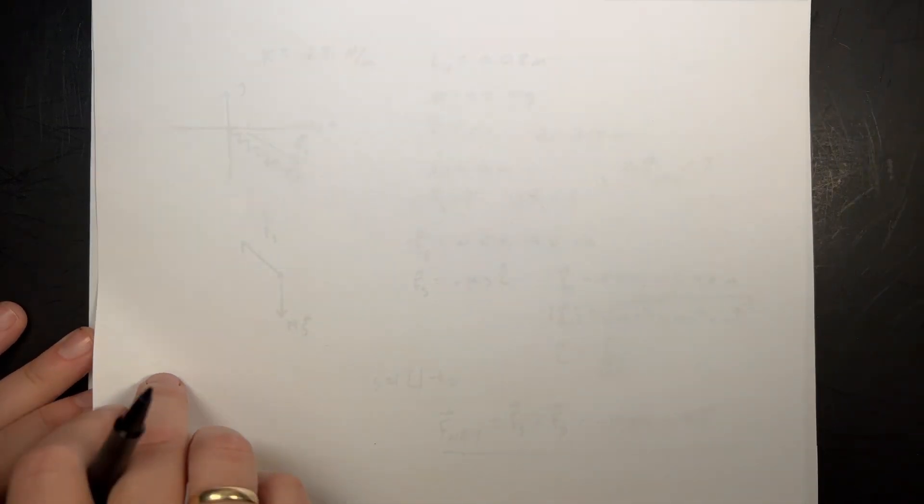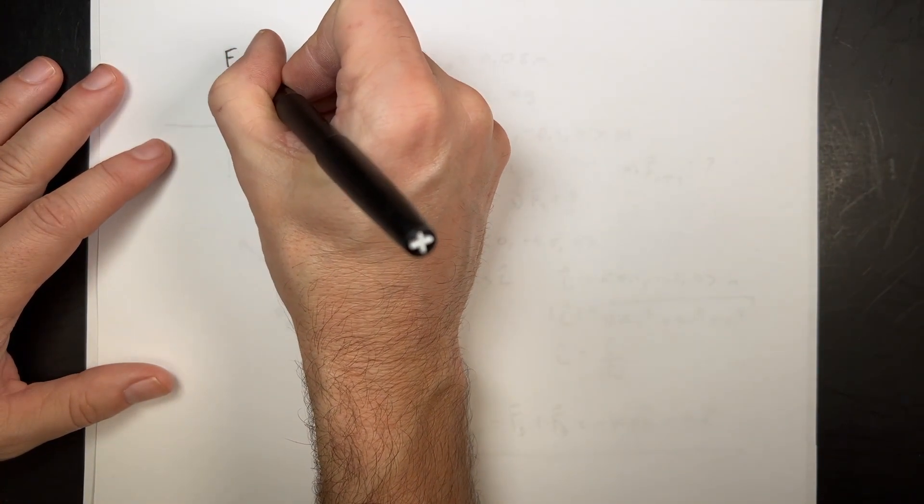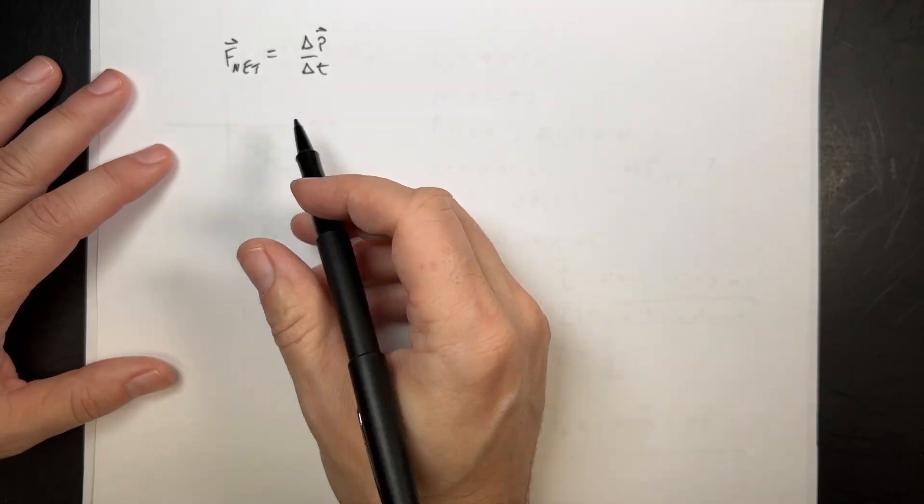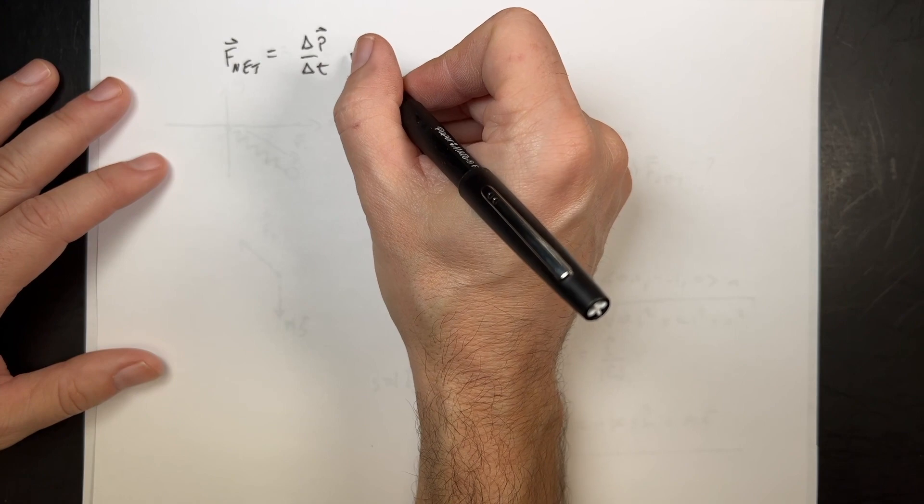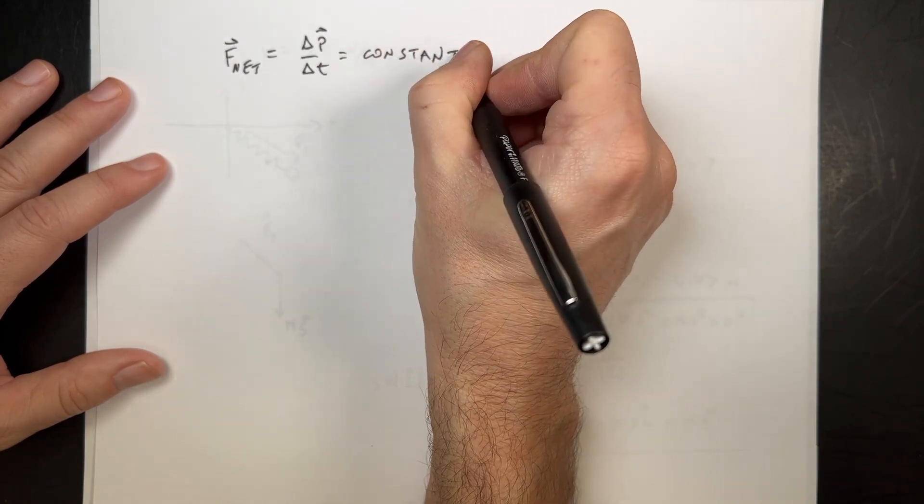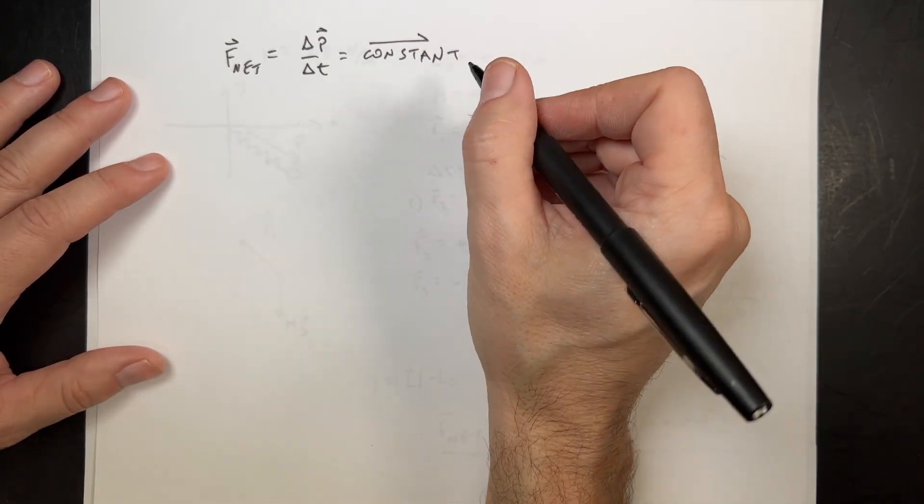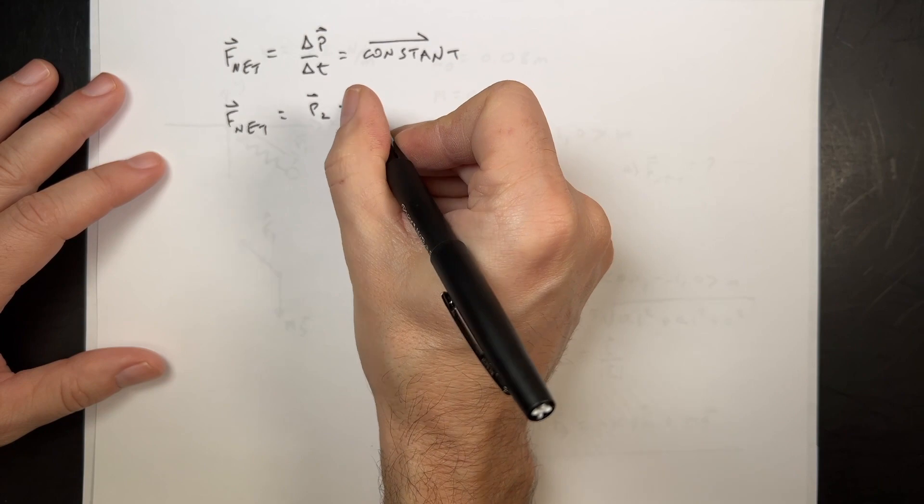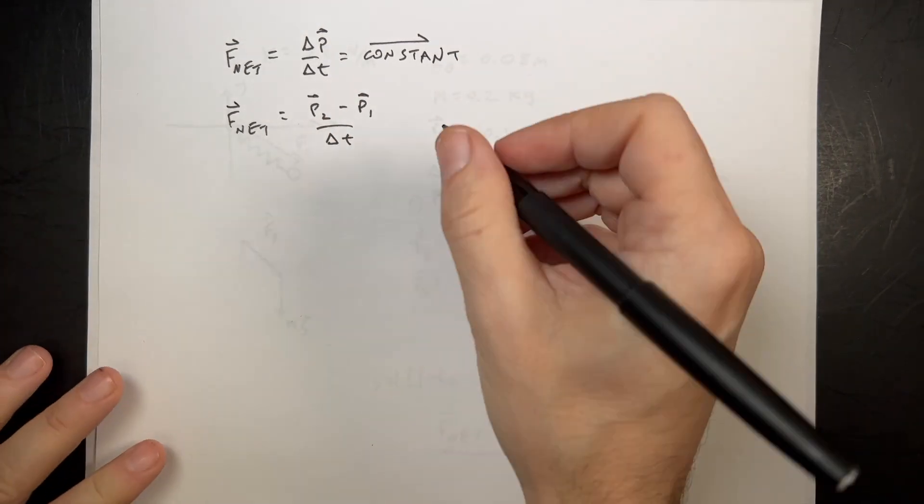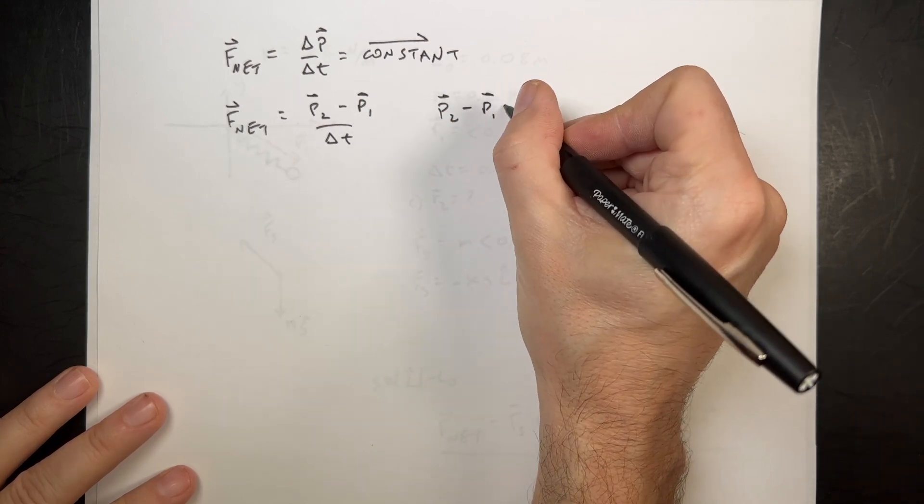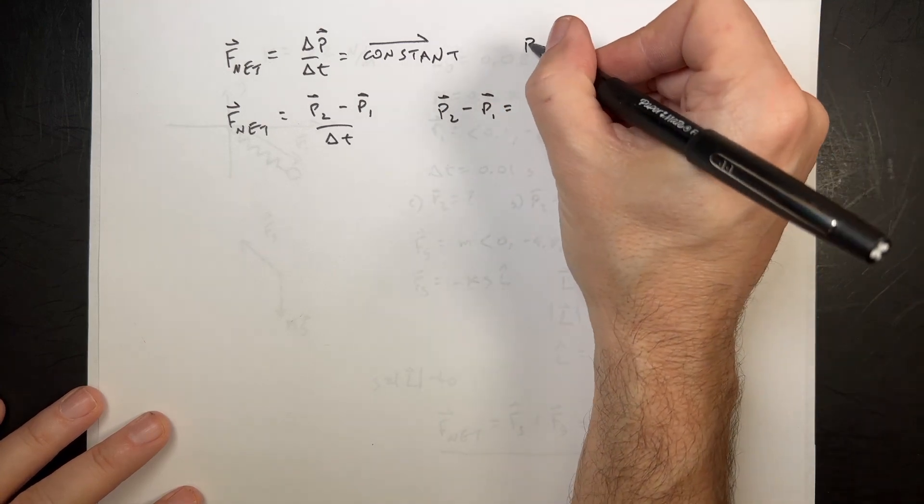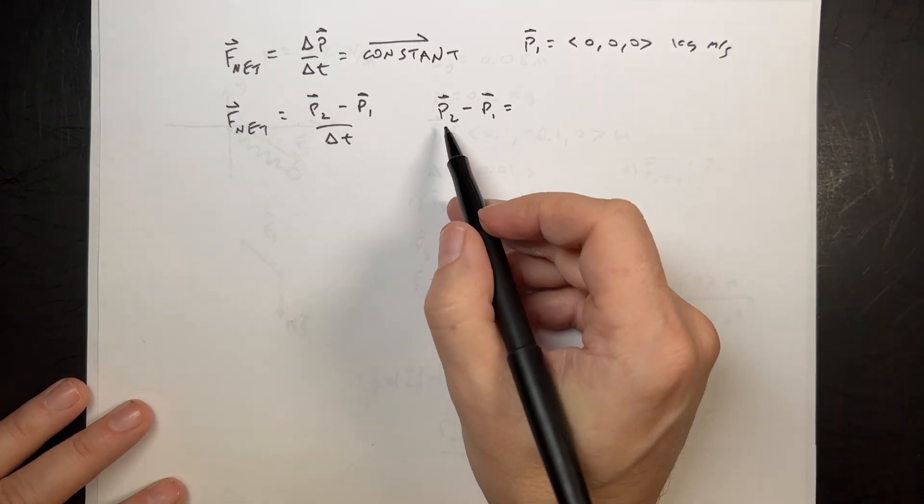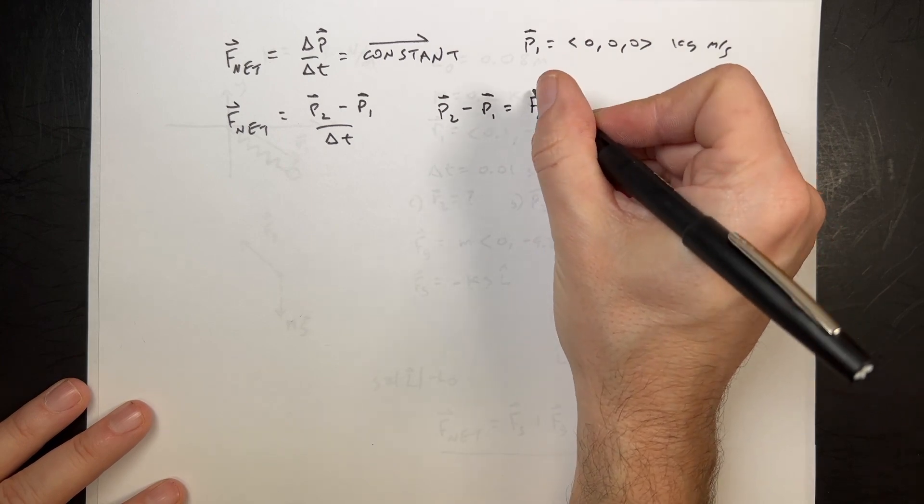Now the next question is, after 0.01 seconds, what's the momentum? So I can say F net is delta P over delta T. That's the momentum principle. And if we have a very short time interval, which we do, I can make the assumption that this is a constant. And that would be a vector. If that's true, I can say F net is equal to P2 minus P1 over delta T. Now I can multiply both sides by delta T, and I get P2 minus P1 equals F net delta T. I did say release from rest, so P1 is 0, 0, 0, kilogram meters per second.